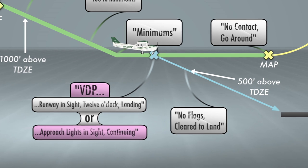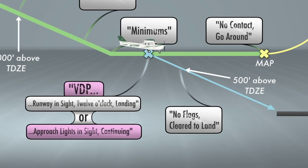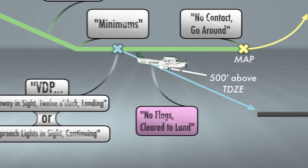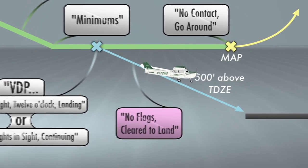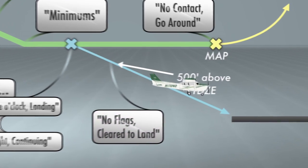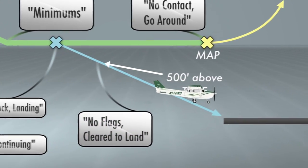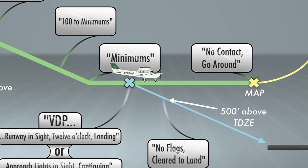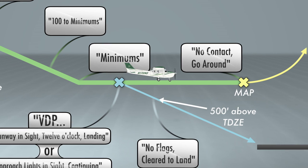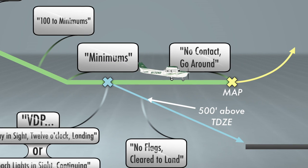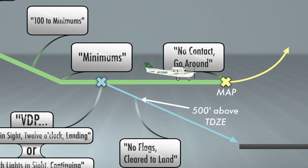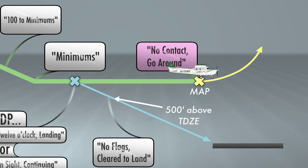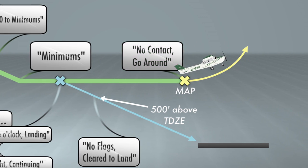Upon reaching the MDA, the pilot flying will call out 'minimums.' Upon reaching the visual descent point, the pilot will call out 'VDP, runway in sight, 12 o'clock, landing' or 'approach lights in sight, continuing.' As the aircraft continues the descent to the runway, the pilot flying will call out 'no flags, clear to land' once the aircraft reaches 500 feet above the touchdown zone elevation. If after reaching the MDA the pilot fails to meet the requirements to descend, she will continue at the MDA to the missed approach point and call out 'no contact, go around,' then execute the missed approach procedure.